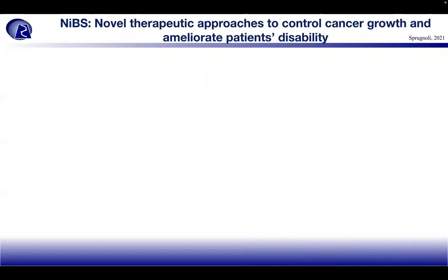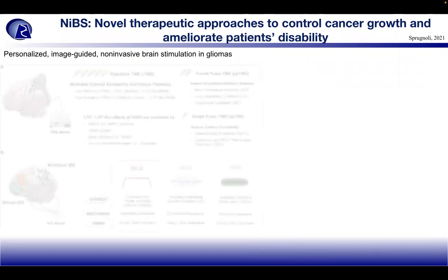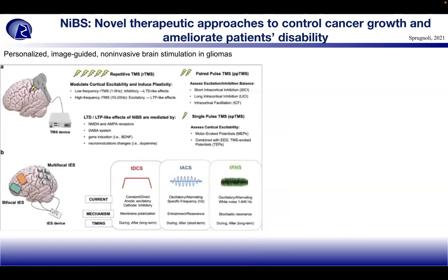Moving to NIBS, a novel non-invasive therapeutic and imaging technique: this is a personalized image-guided non-invasive brain stimulation technique in gliomas. Repetitive transcranial magnetic stimulation (TMS) devices can operate at different low and high frequencies for inhibitory or excitatory effects — LTD-like or LTP-like effects, mediated by NMDA and AMPA receptors, the GABA system, gene induction like BDNF, and neuromodulator changes like dopamine. Paired pulse or single pulse options are also available.